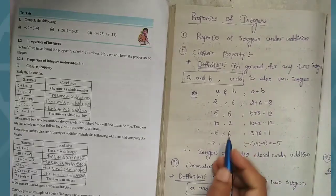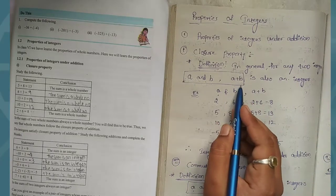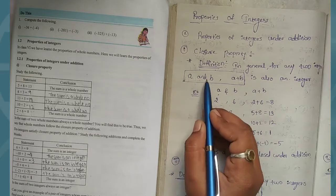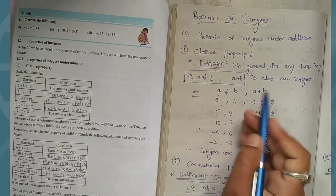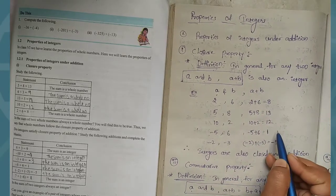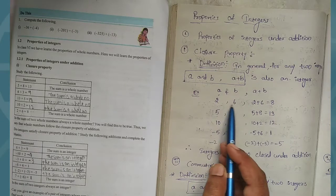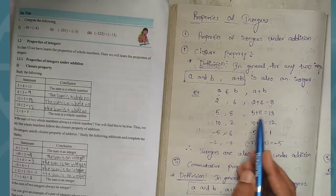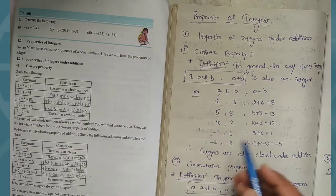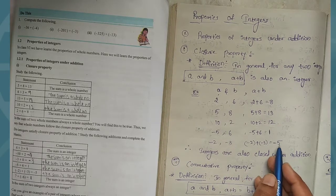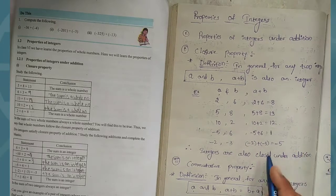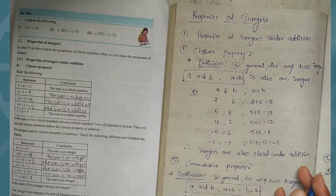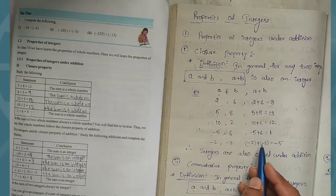In general, for any integers a and b, a plus b is also an integer. This means if two numbers are integers and we add them, the result is an integer. For example, if a is 2 and b is 6, their sum is also an integer — including with negatives. So integers are closed under addition. This is the closure property.